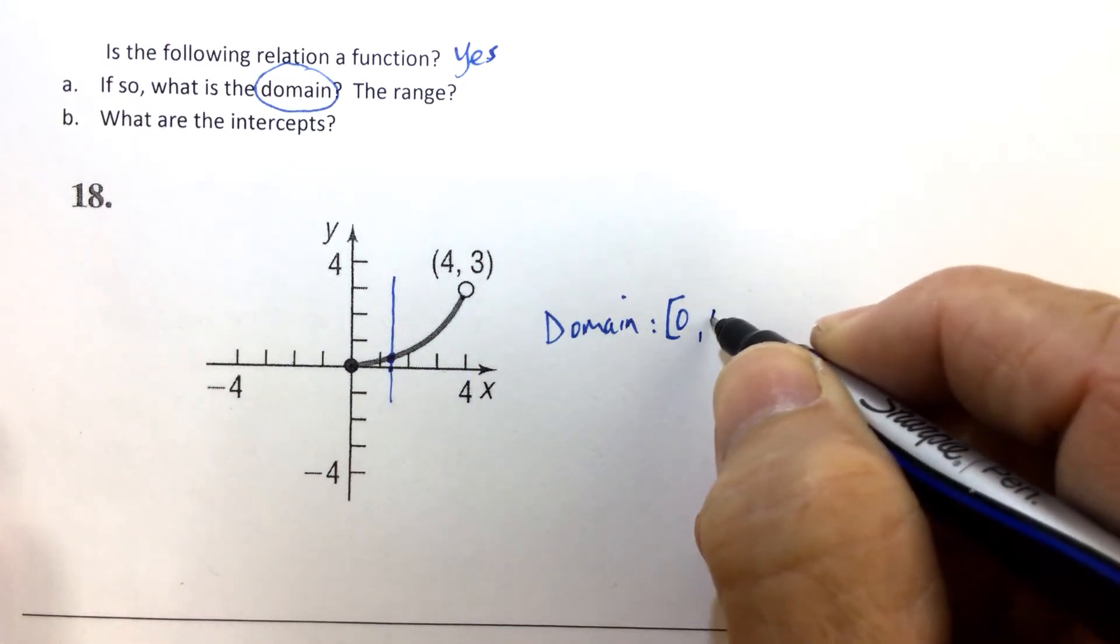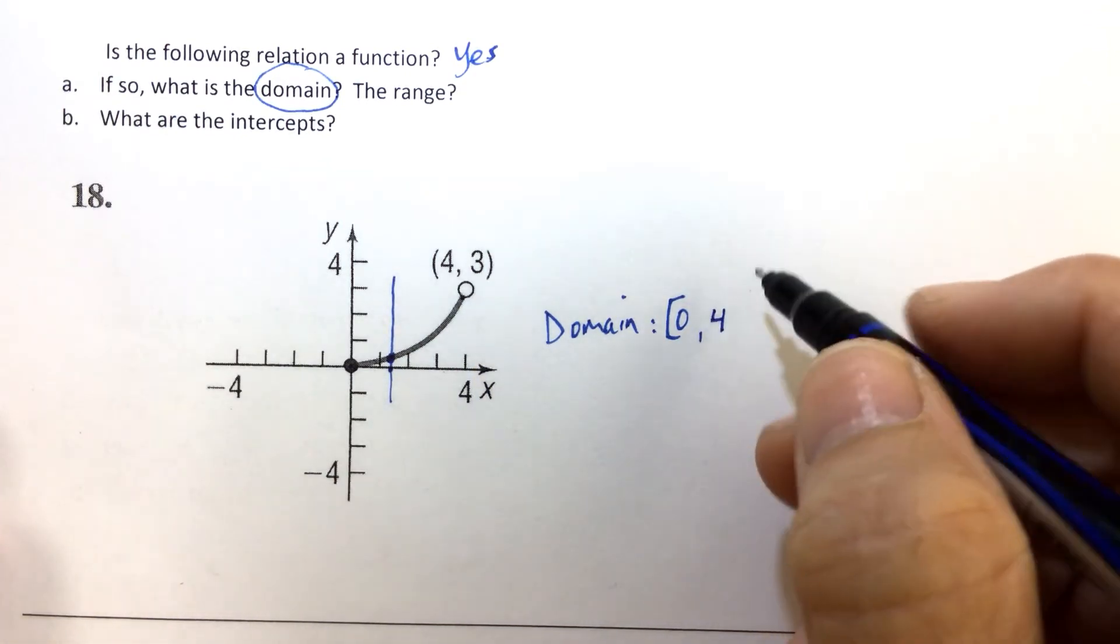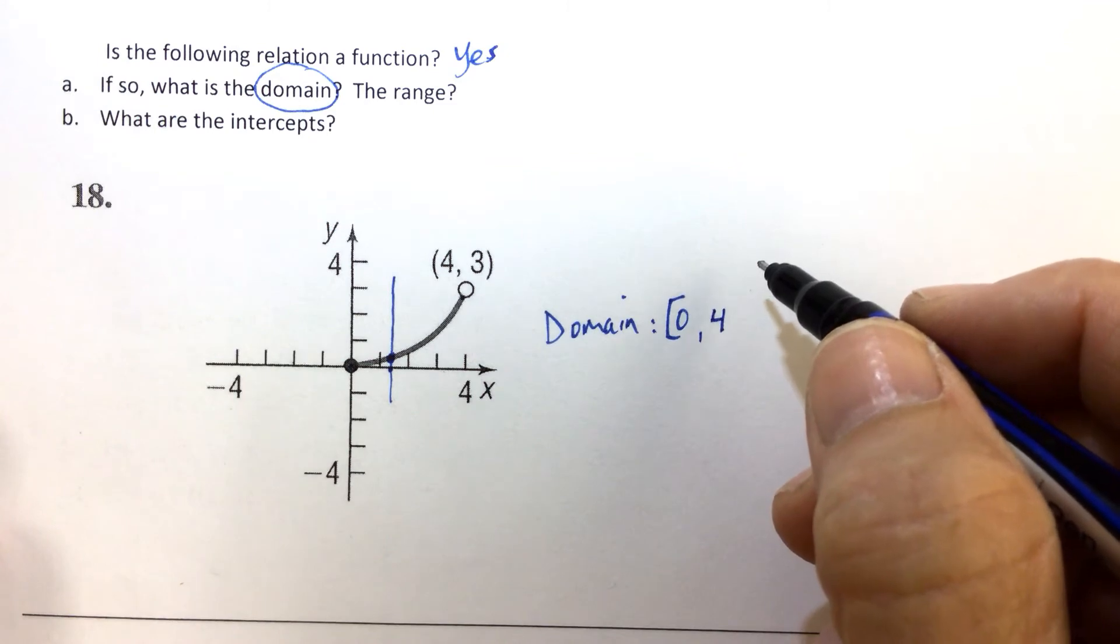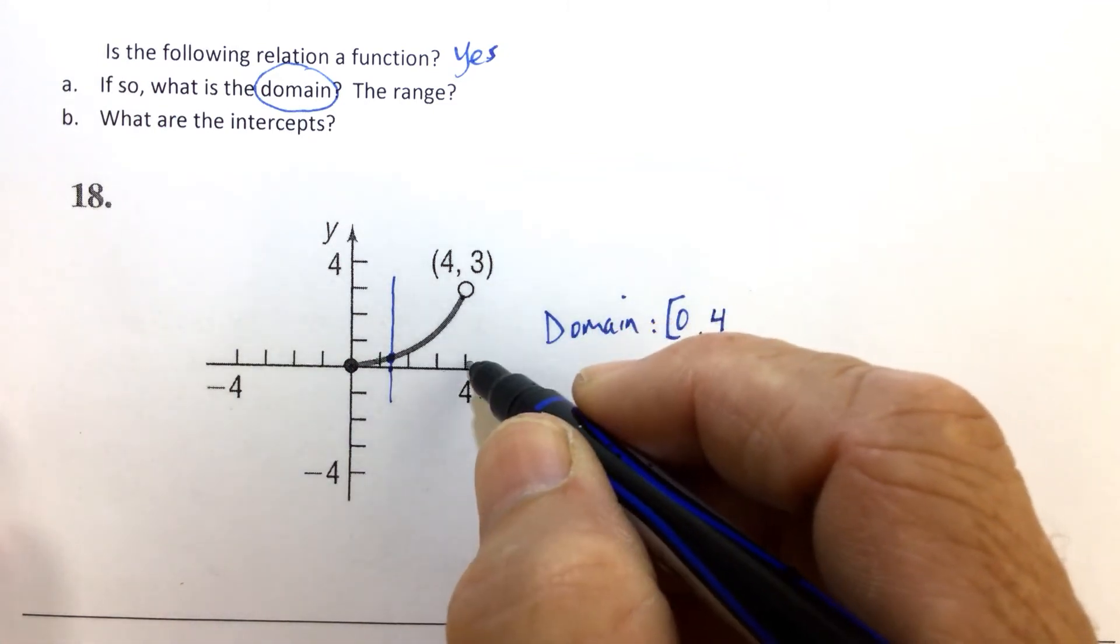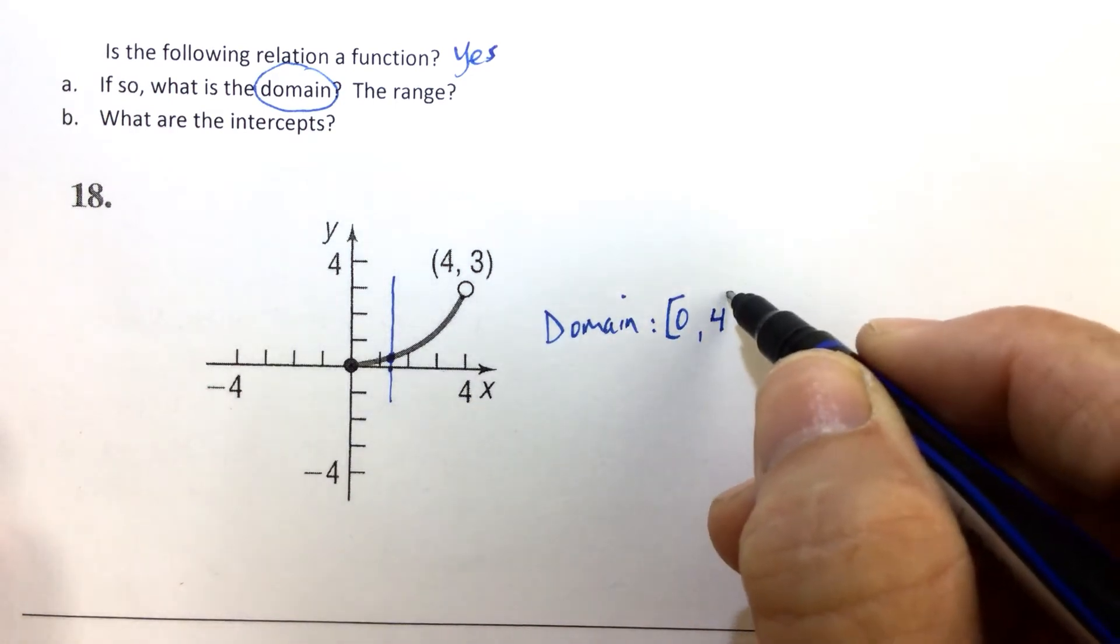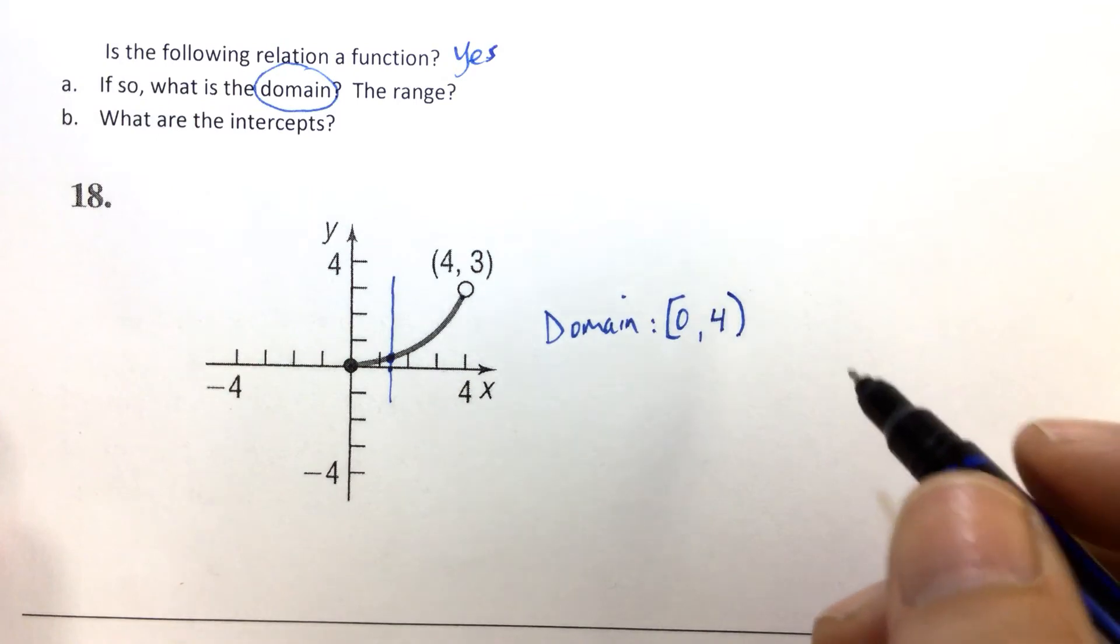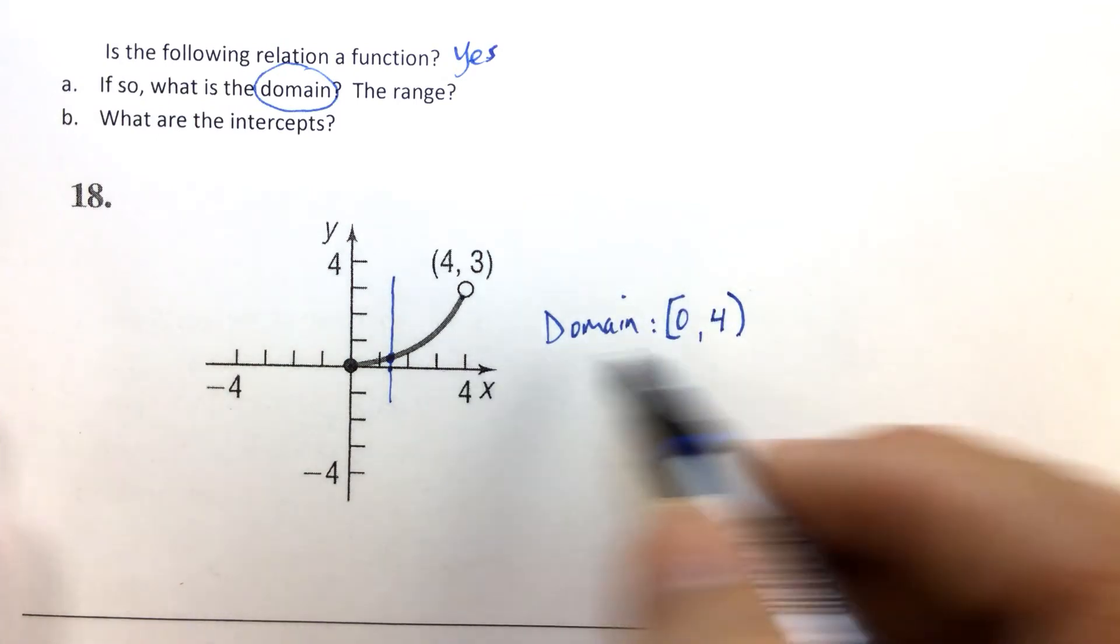The last x-value you could plug in would be—well, there is no last x-value. There's no maximum value of x that you can plug in. You just keep plugging in numbers. As long as they're smaller than 4, it's okay to plug them in. But if you get to 4,